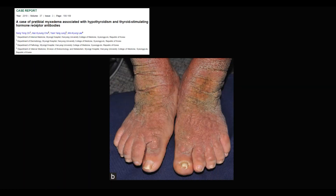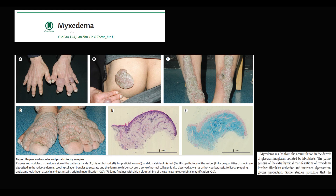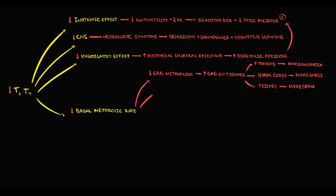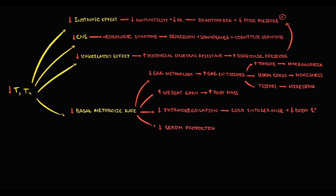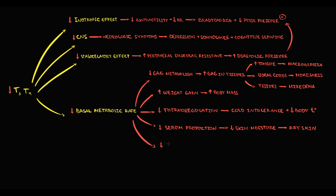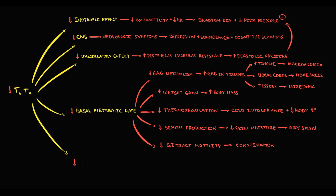We can see pretibial myxedema in patients with hypothyroidism. Myxedema can also manifest as various plaques and nodules on the skin. Decreasing metabolic rate provokes weight gain. With low metabolic rate, body temperature decreases, and patients often complain of cold intolerance and low body temperature. Decreasing metabolic rate also causes decreasing sebum production, which leads to dry skin. Additionally, GI tract motility decreases, so patients with hypothyroidism often have constipation.